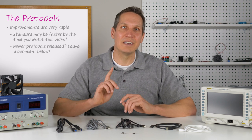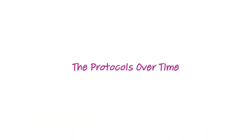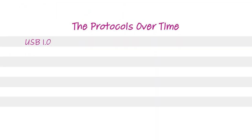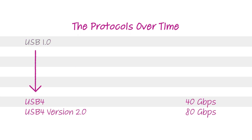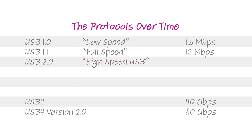Leave a comment below of what the latest and greatest standard is, and we can watch the evolution over time. The protocol started at USB 1.0 and, as of now, the newest standard is USB 4. USB 1.0 was capable of 1.5 megabits per second — called low speed — which was quickly upgraded to USB 1.1 at 12 megabits per second, called full speed. With the move to USB 2.0, it was called high speed USB, seeing transfer rates up to 480 megabits per second.